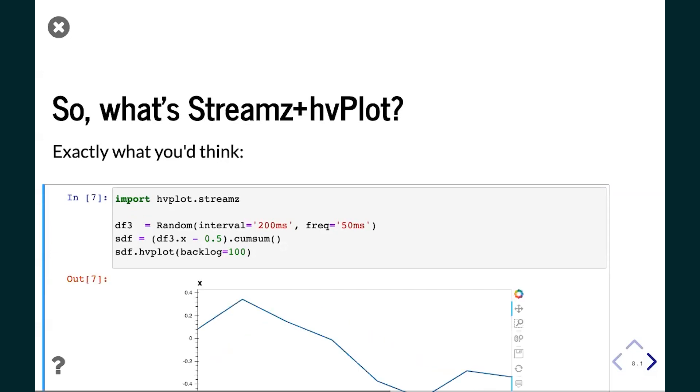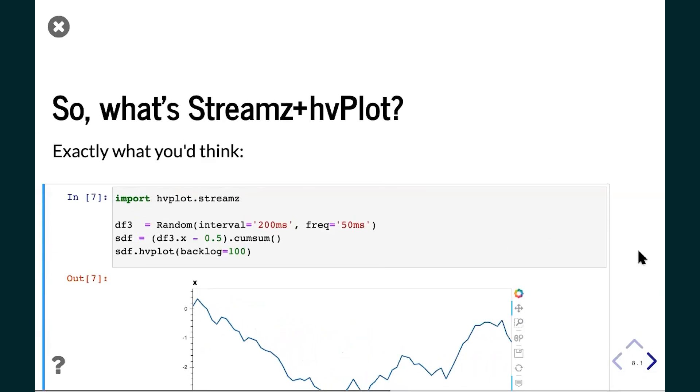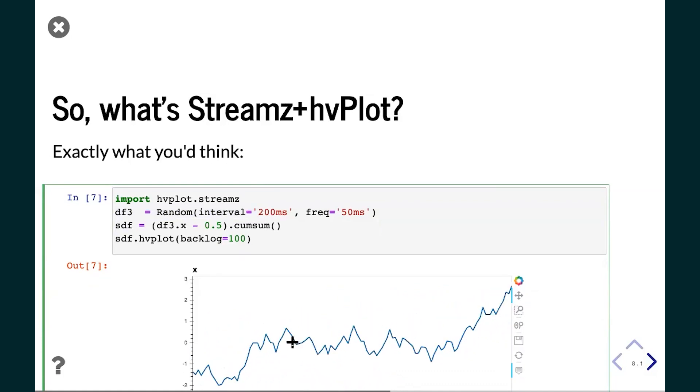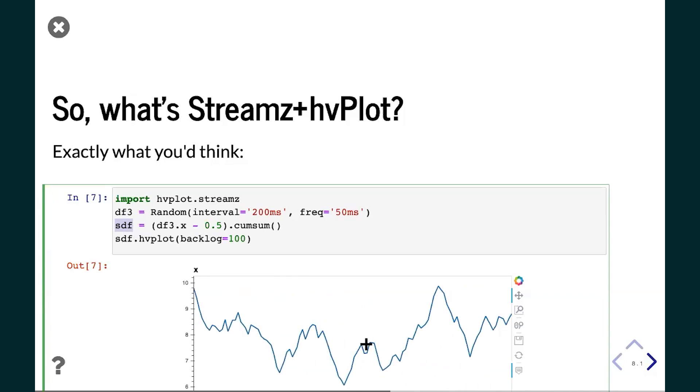So what happens when you combine Streamz and hvPlot? Well, hopefully exactly what you would have expected. All you do is import hvplot, but instead of hvplot.pandas to install the Pandas extension, you can do hvplot.streamz to install the Streamz backend. And then if you have a dataframe, this is a Streamz random dataframe, and this is a Streamz random series in this case, it works with either a series or a dataframe.